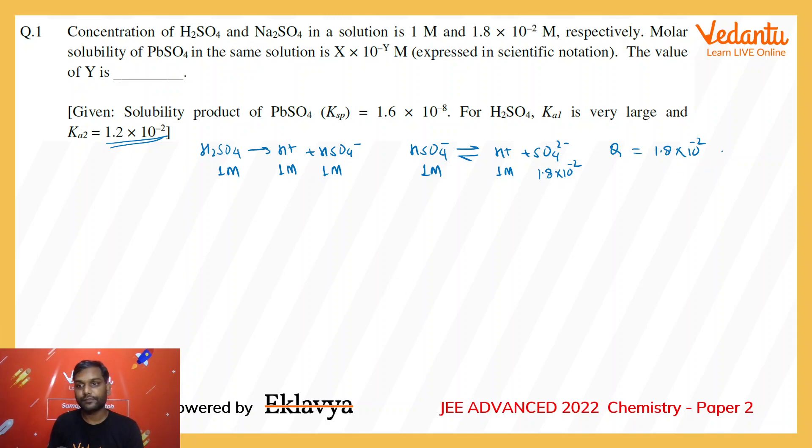This equilibrium will be attained by moving in backward direction. So suppose x molar sulfate gets consumed, x molar H+ gets consumed, and x molar of HSO4- will be formed because the ratio is 1:1 in the reaction.